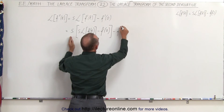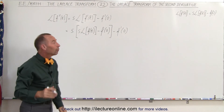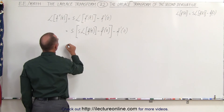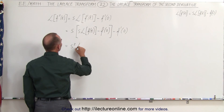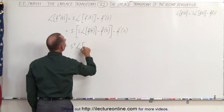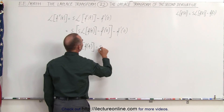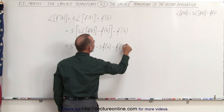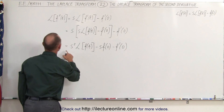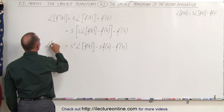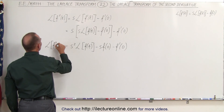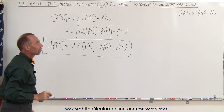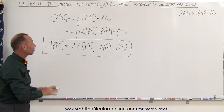Now all we have to do is multiply s by the terms inside, so this becomes s squared times the Laplace transform of f(t), minus s times the function evaluated at zero, minus the first derivative of the function evaluated at zero. This is the equation we use to find the Laplace transform of the second derivative of a function.